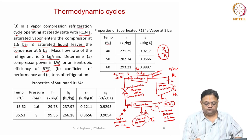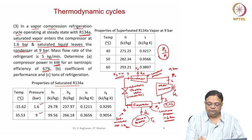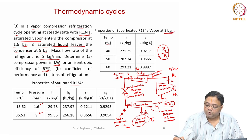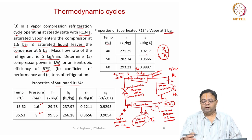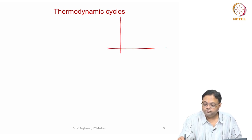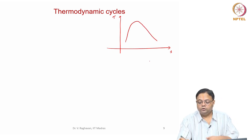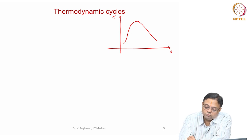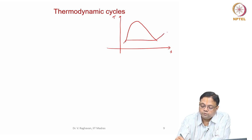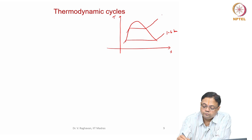The properties are also given — for saturated R134A at 1.6 bar and 9 bar the quantities like hf, hg, sf, sg are given. Similarly, at 9 bar superheated, for different temperatures H and S values are given. Now let us draw the T-S diagram — this is 1.6 bar and this is 9 bar.